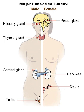The typical mode of cell signaling in the endocrine system is endocrine signaling, that is, using the circulatory system to reach distant target organs. However, there are also other modes including paracrine, autocrine, and neuroendocrine signaling. Purely neurocrine signaling between neurons, on the other hand, belongs completely to the nervous system.